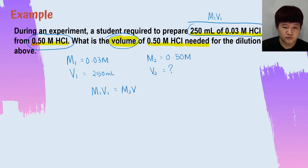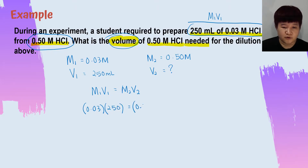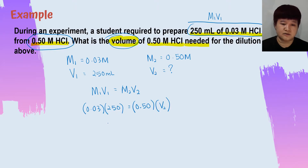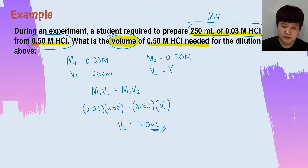The formula is M1V1 = M2V2. M1 = 0.03, V1 = 250 millilitres, M2 = 0.50. Solve for V2. Press your calculator and calculate: V2 = 15 millilitres. The unit is millilitres because V1 was in millilitres, so V2 calculated will also be in millilitres.